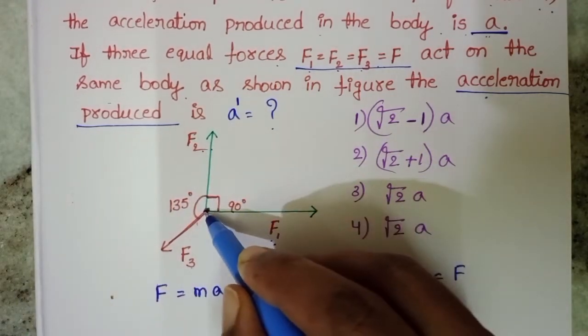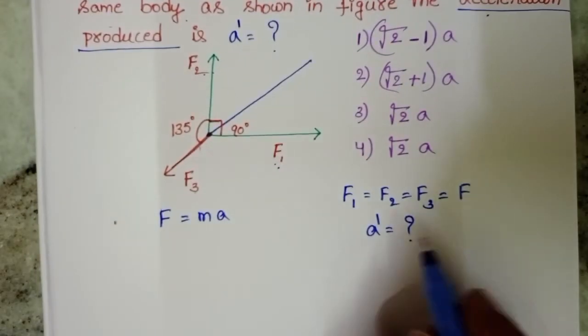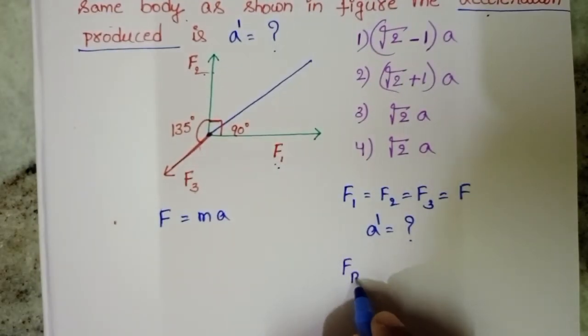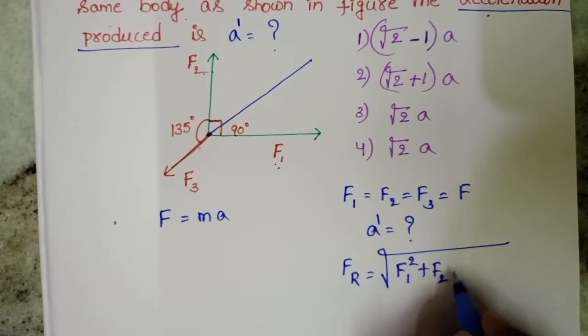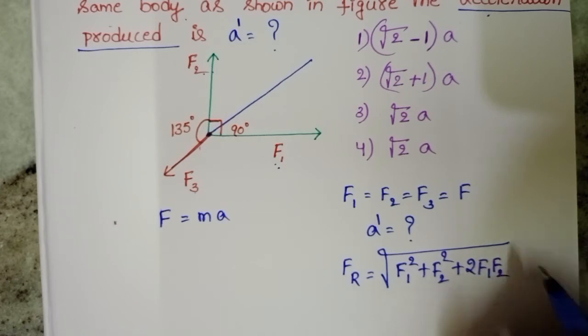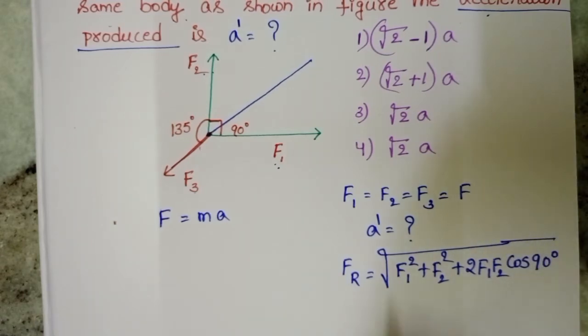So the resultant force between these two forces, let it be FR. FR equals square root of F1 squared plus F2 squared plus 2F1F2 cos theta. Theta equals 90 degrees. Cos 90 value is 0, so this term is 0.